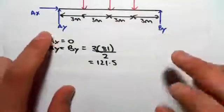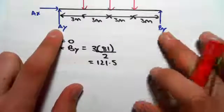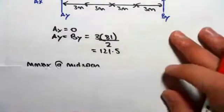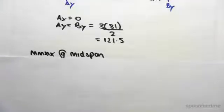So we know now that the reaction in each support, AY and BY is 121.5. Now the same logic applies to finding maximum midspan moments.